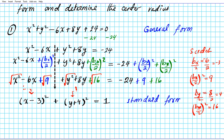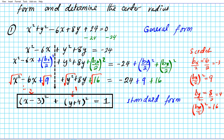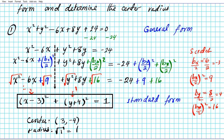This is the standard form of the equation of the circle. We were also asked to determine the center and radius. The center is (h, k): to find h, take the opposite of negative 3, which is positive 3; to find k, take the opposite of positive 4, which is negative 4. So the center is (3, negative 4). The radius is the square root of the constant on the right — the square root of 1 is just 1.